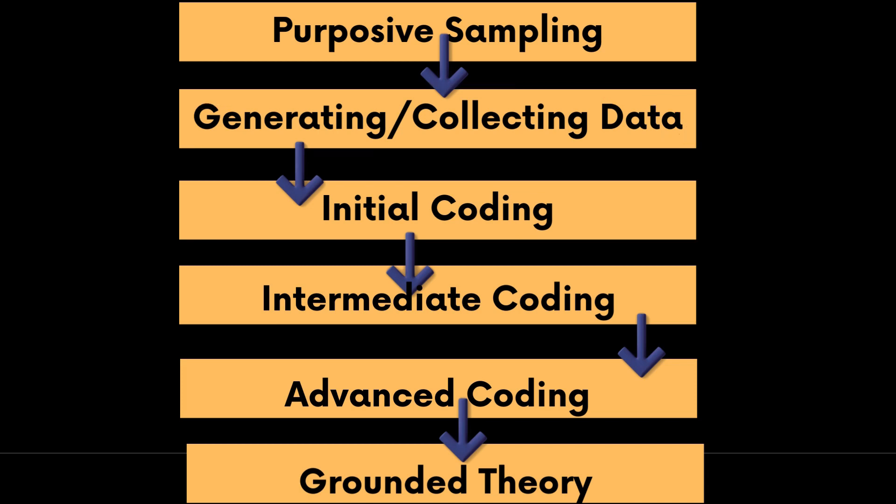This is followed by initial coding. Initially it could be coding and category identification. This is followed by intermediate coding where we select code categories and saturate the data. Finally, we go for advanced coding which involves storyline and theoretical coding.